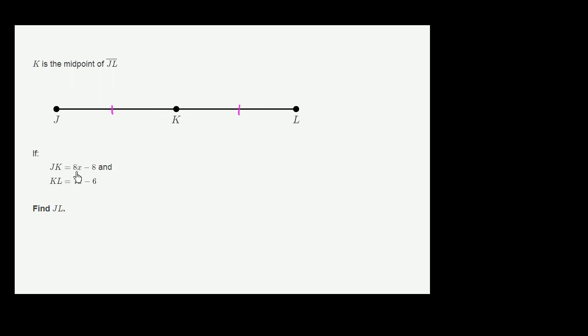And they tell us that segment JK is equal to 8x minus 8. So this distance right over here is equal to 8x minus 8.